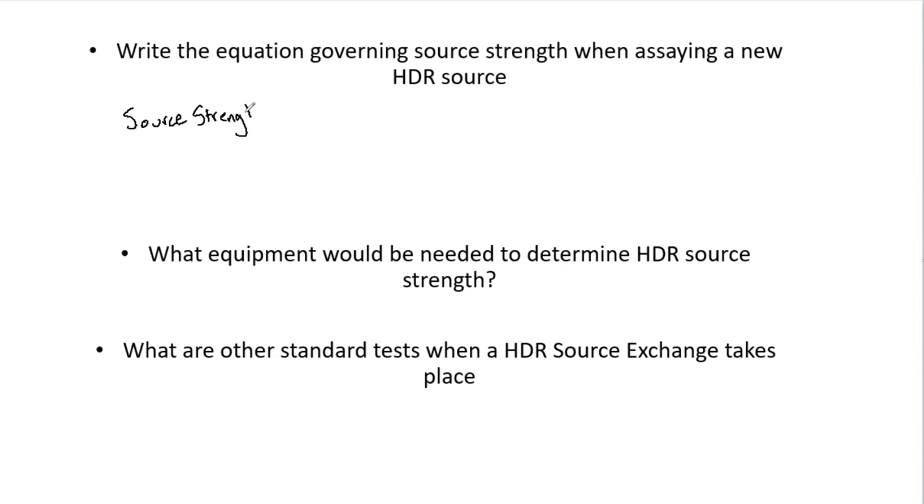So to begin, we need to know what our source strength is when we are measuring our new HDR source. To find that, we are going to use M-raw. This is the same as when you use a LINAC, it's just the uncorrected reading from your electrometer. This will be in nanoamps.